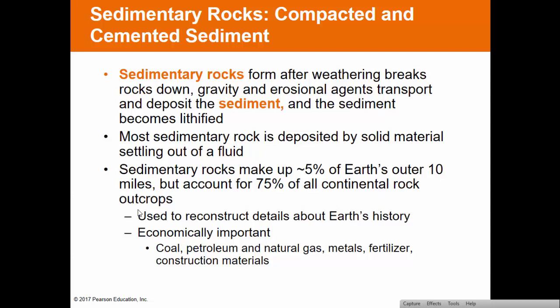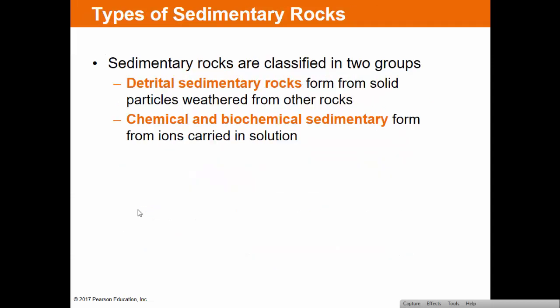Sedimentary rock makes up about 5% of the Earth's outer 10 miles but accounts for about 75% of continental rock outcrops. It's excellent for reconstructing Earth's history because it's laid down in layers and contains fossils — you can tell a lot about the depositional environment just by looking at the rock. It's also economically important because coal is a sedimentary rock, and petroleum and natural gas move through sedimentary rocks. Metals and other useful materials for fertilizer and construction are also found in sedimentary rock.